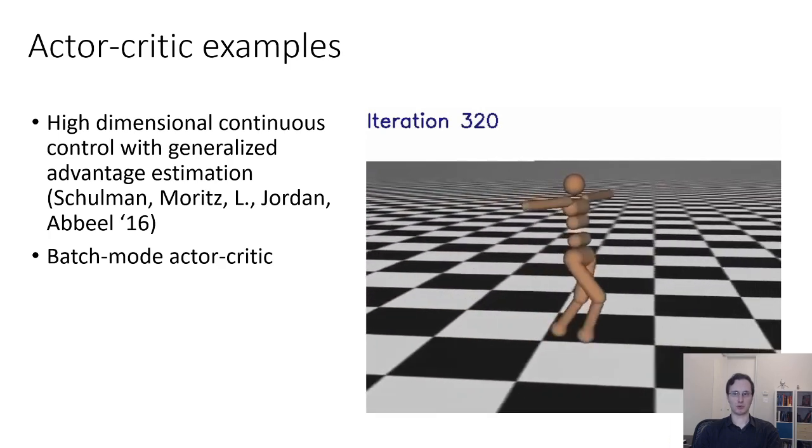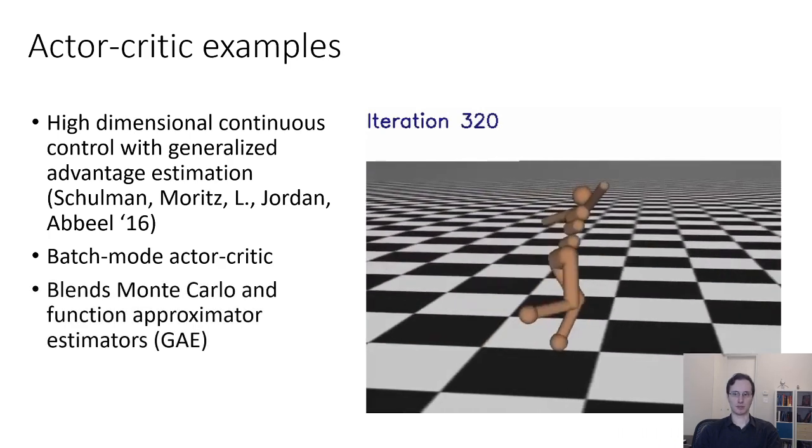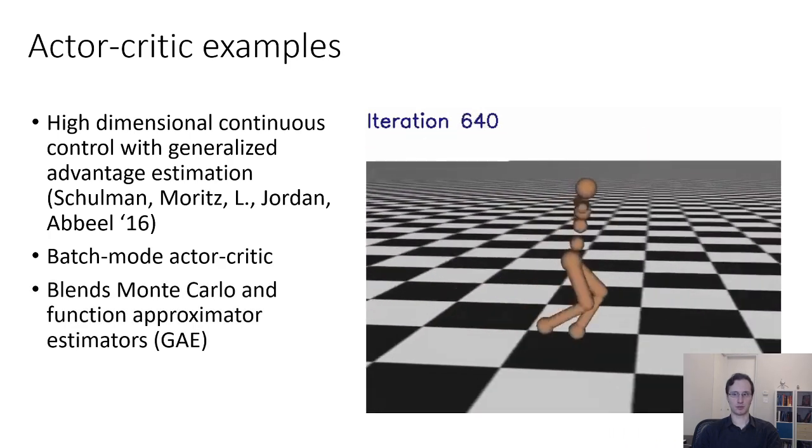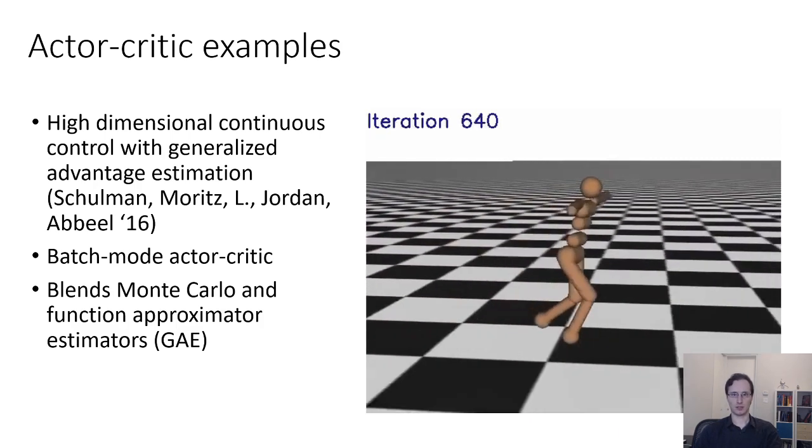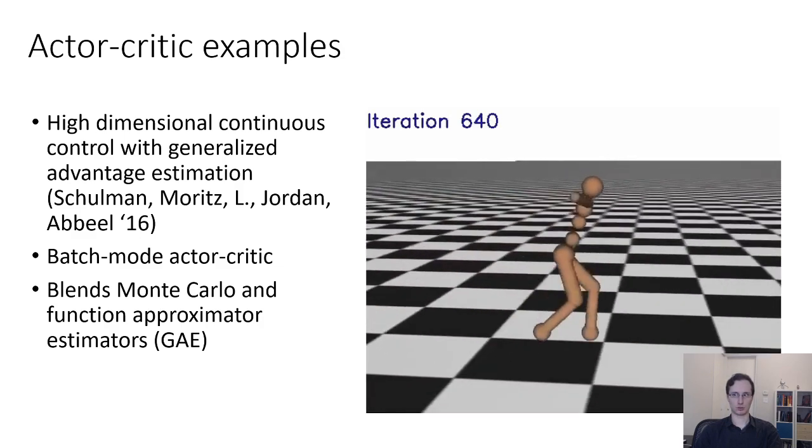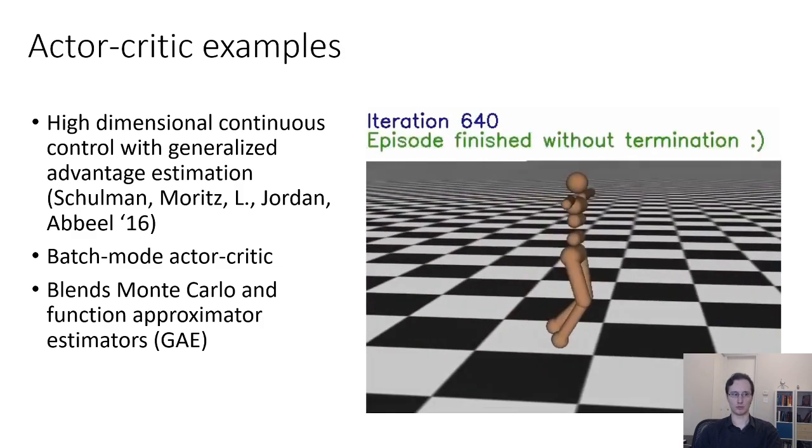This uses a kind of batch mode actor-critic, which combines Monte Carlo and function approximator estimators via this GAE trick. And in this paper, the experiments focus on continuous control tasks like this running humanoid robot.